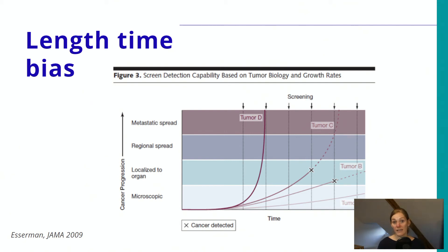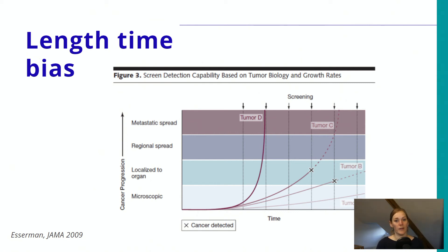In contrast, tumor D in this picture is really aggressive and grows extremely fast. You can imagine that if a tumor develops in two months but the screening program is every two years, an aggressive tumor is much more likely to be an interval tumor and therefore to result in mortality.